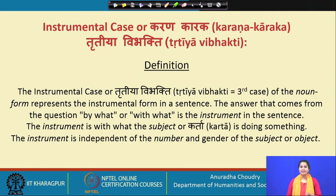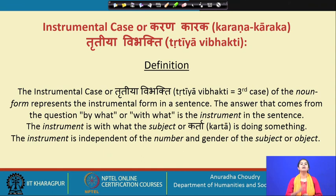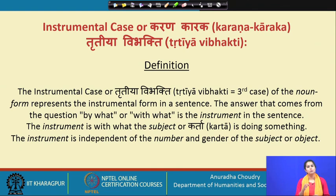For example, hastaha becomes hastena khadati. When it says independent of the subject, it means 'purushaha hastena khadati' and 'mahila hastena khadati.' The masculine and the feminine will not affect the way the instrument is declined. Neither does number affect it: 'purushaha hastena khadanti' means all the men eat with their hand, 'mahila hastena khadanti' means the ladies eat with their hand, and 'mitraani hastena khadanti' means the friends also eat with their hand.